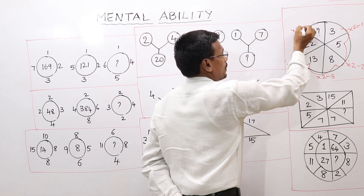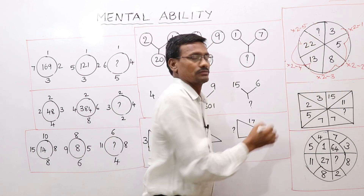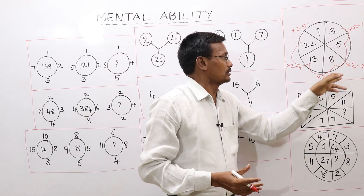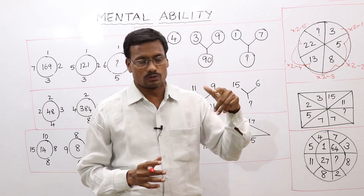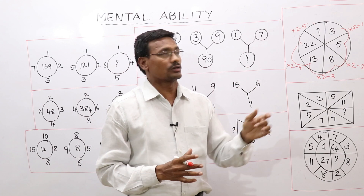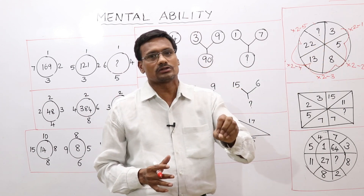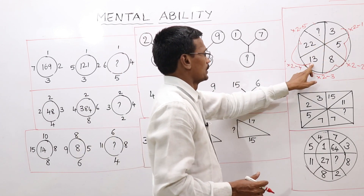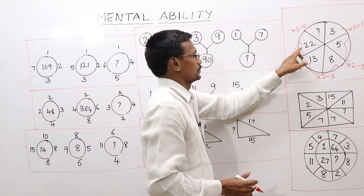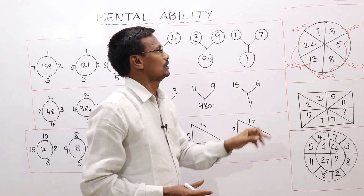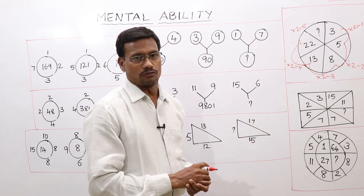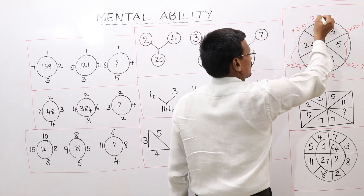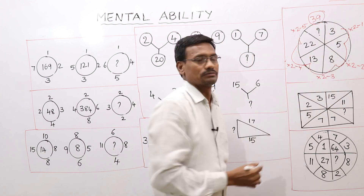So applying this rule, 22 into 2 is 44. 44 minus 5 is equal to 39. So the answer is 39.